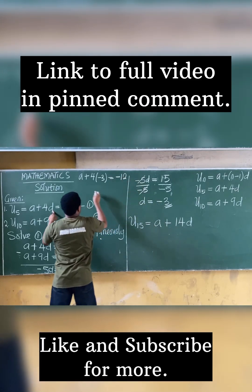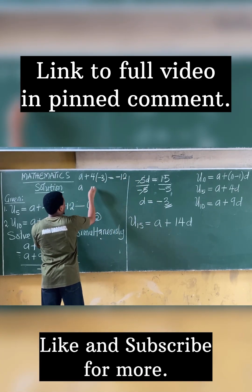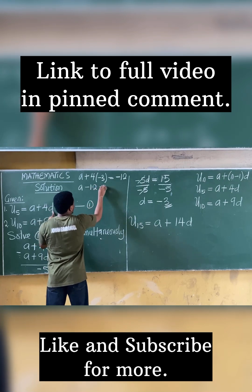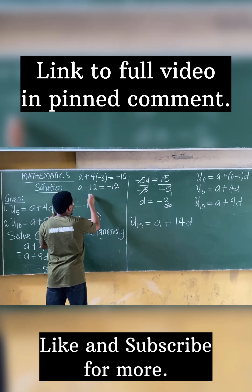equal to minus 12. So I have that A plus 4 multiplies minus 3. I will have minus 12 is equal to minus 12. Bring minus 12 over here.